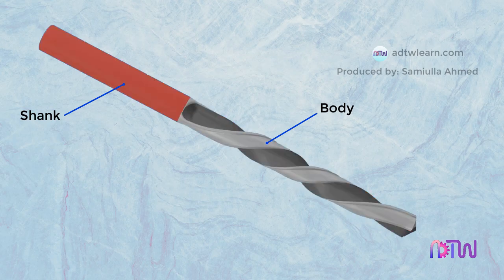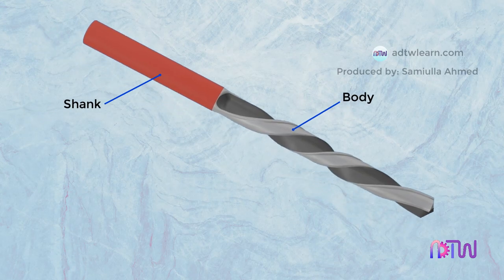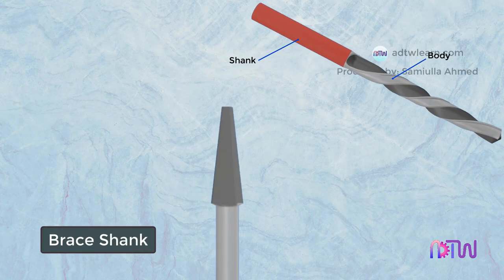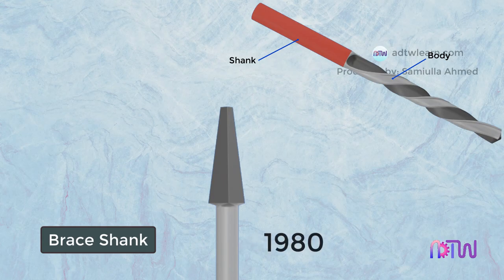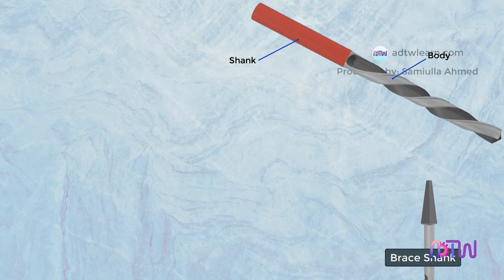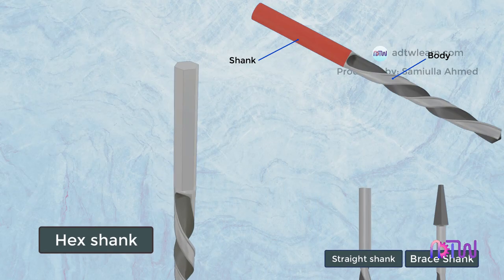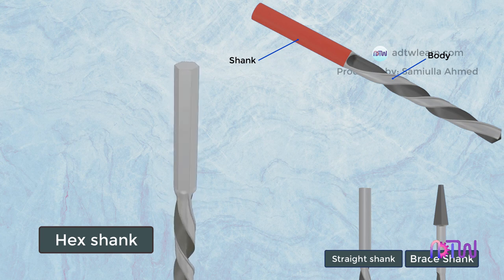The shank of the drill can be of different types. Brace shank: this shank was most commonly used before 1980 and it is still in production. Straight shank: this type of shank is most common these days. Hex shank: this type of shank does not slip during operation because of its shape.